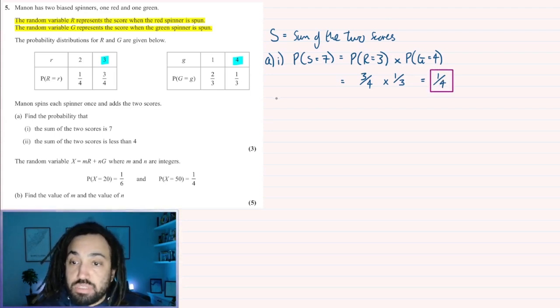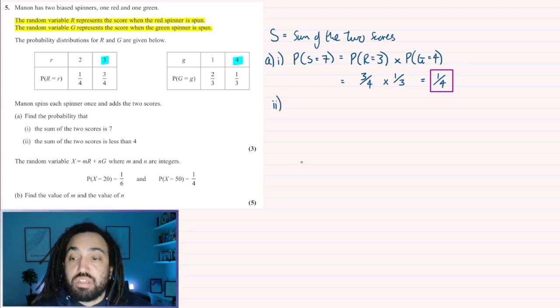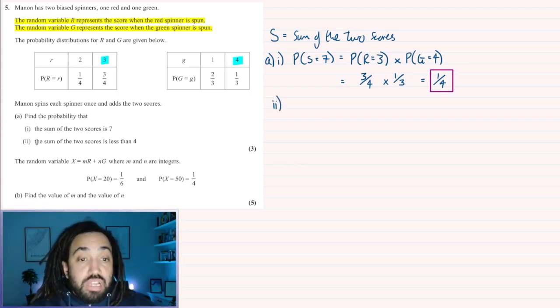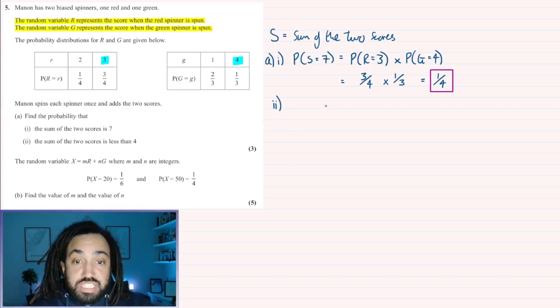Fairly straightforward. Let's move on to part two. The sum of the two scores is less than 4. So we need the probability that S is less than 4.